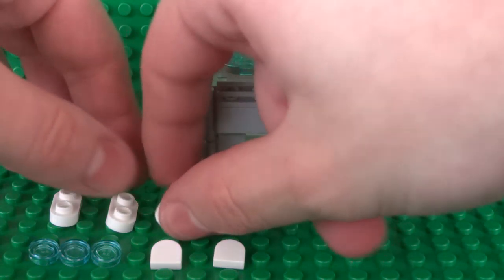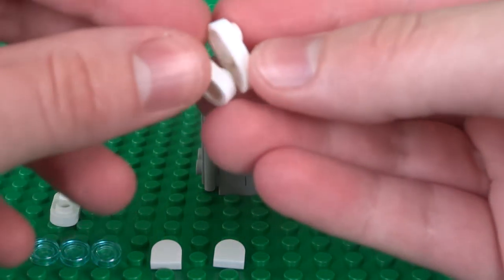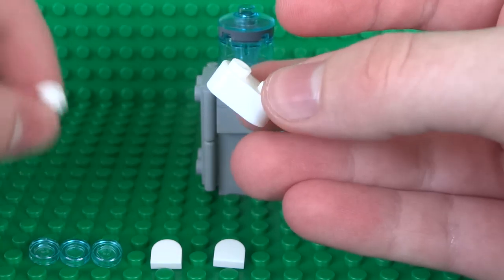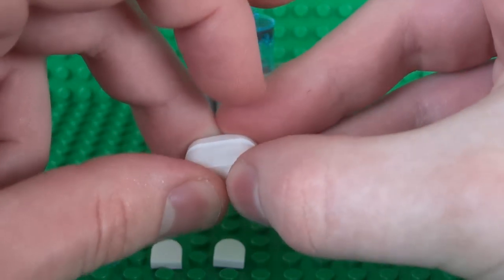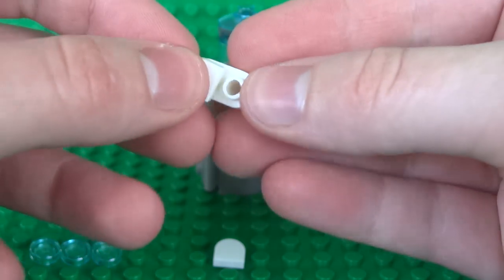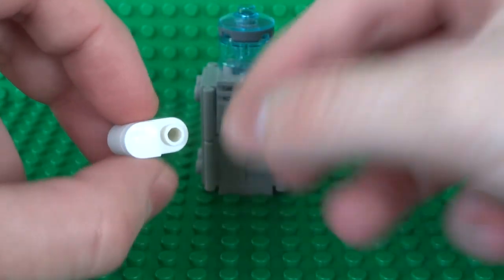Then finally, the last part that we need to build is the button that you press down on to dispense your water, so just build this up out of the round 1x2 plates as well as some 1x1 round tiles.